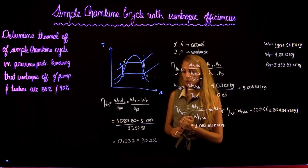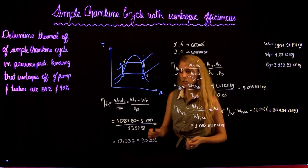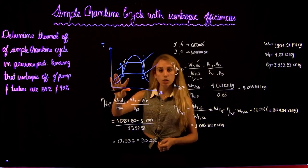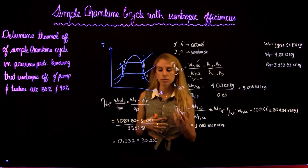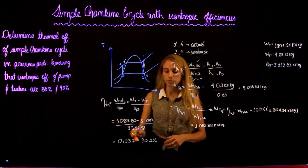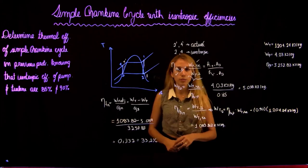So as we said before, in an actual case there are losses due to different factors, and that is why the thermal efficiency is lower than what we found in the ideal isentropic case.